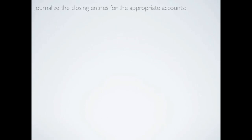Now let's journalize the closing entries for the appropriate accounts. The first accounts we close are the sales revenue accounts. Sales revenue was $86,900. Sales revenue carries a credit balance, so we debit sales revenue to get rid of it and close it to the income summary with a credit of $86,900.